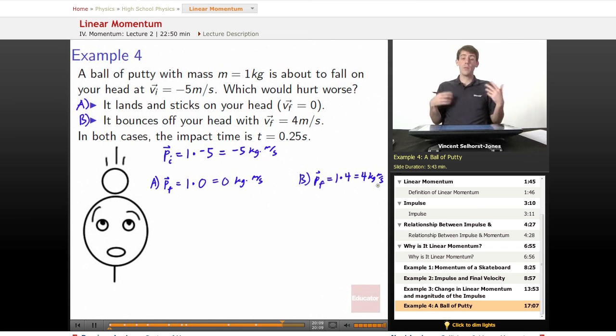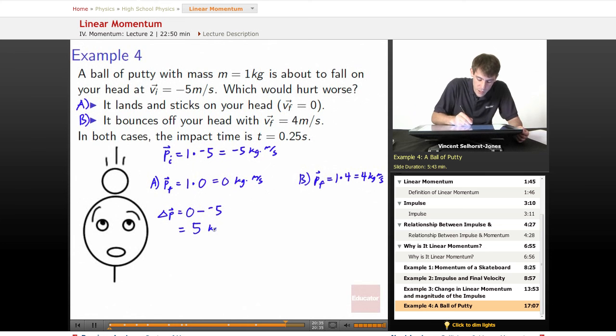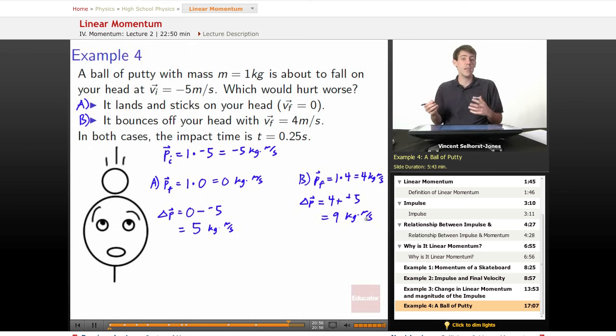So it might make sense at this point to go, okay, the one with less change in the momentum is the second case B, because we go from 5 to 4. But that's not the case, right? We go from negative 5 to 4. So which is a bigger change, going from negative 5 to 0 or from negative 5 to 4? So we check that out. Change in momentum is equal to the final minus the initial. So positive 5 kilograms times meters per second is what it is for A. In B, change in momentum is going to be equal to 4 minus a negative 5. So we get 9 kilograms times meters per second. So there's more change in momentum in case B than in case A.